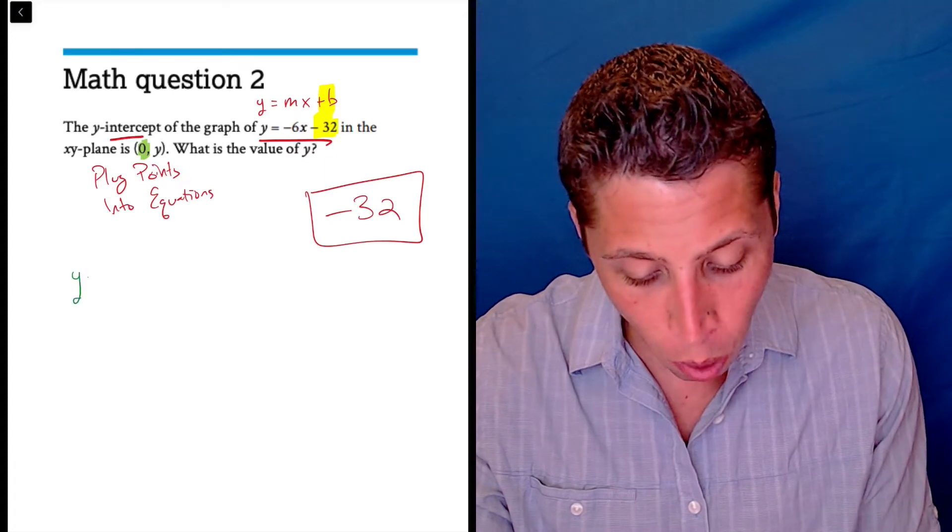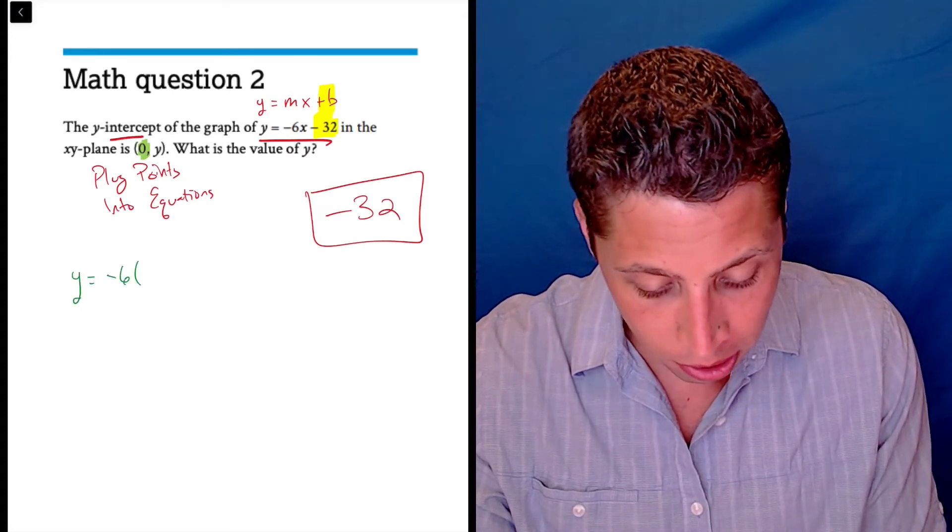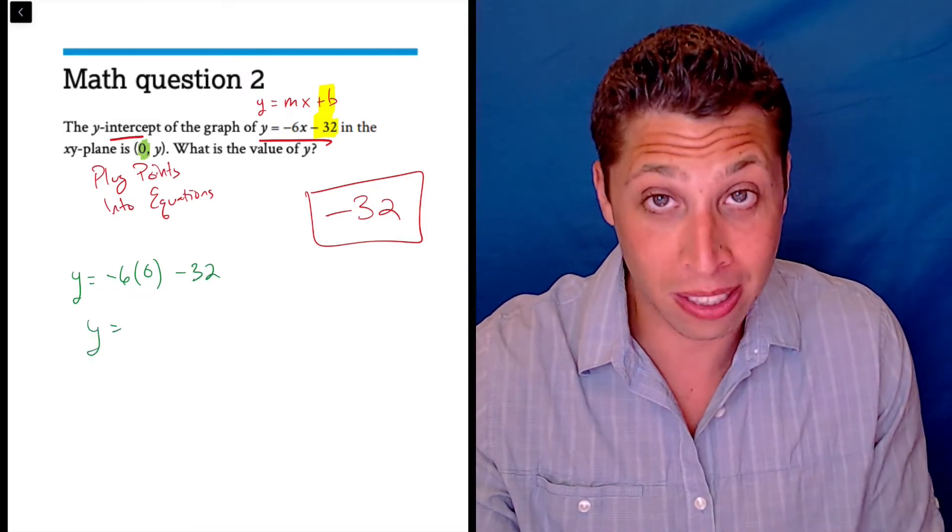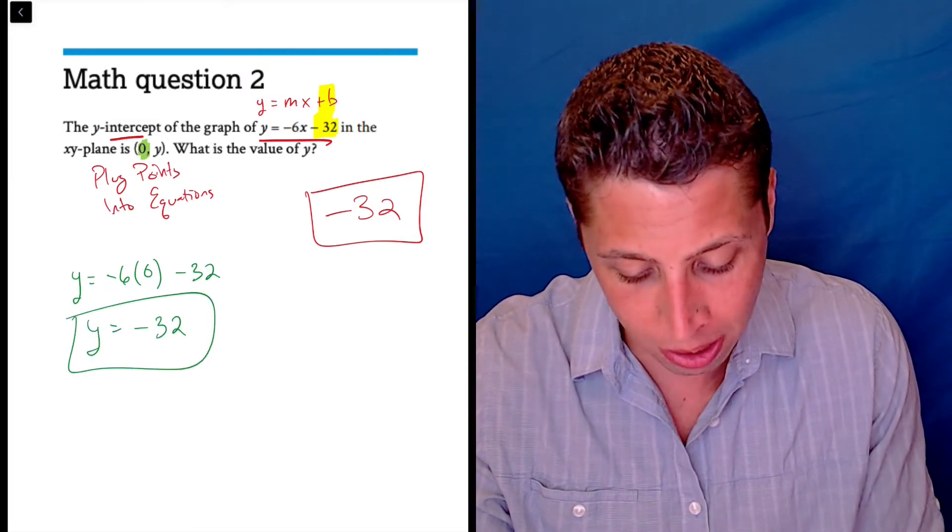So that would mean that y, we don't know, but m is negative 6, zero is my x, minus 32. Look what happens. Negative 6 times zero is zero, so this is just y equals negative 32, same thing.